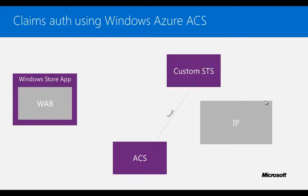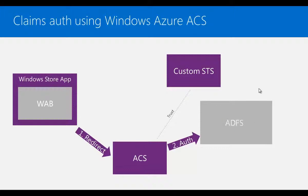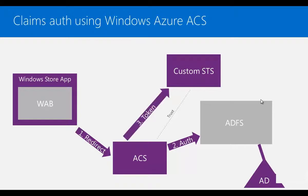Now let's have a look at the authentication flow. When a user launches a Windows Store application configured to use Access Control Service, Web Authentication Broker redirects the user to Access Control Service. Access Control Service shows a home realm discovery page where the user can specify the identity provider with which they wish to authenticate. Access Control Service then redirects the user to the selected identity provider, which could be Microsoft account, Facebook, Google, Yahoo, or a custom identity provider like ADFS which can authenticate with your enterprise Active Directory. After the identity provider authenticates the user, Access Control Service returns the token to your custom STS so that the token can be repackaged in a format that Web Authentication Broker understands. Custom STS repackages the token and sends it to the Windows Store application, and can optionally send claims instead of the entire token.